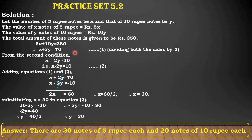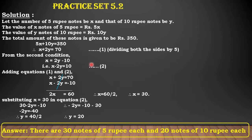From the second condition, we get X is equal to 2Y minus 10. By rearranging the equation, we get X minus 2Y is equal to minus 10. Number this equation as 2. Now, look at the coefficient of variable Y — they are opposites. Therefore, we can add equations 1 and 2.